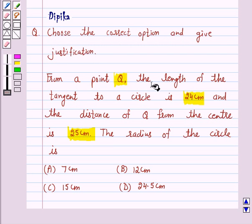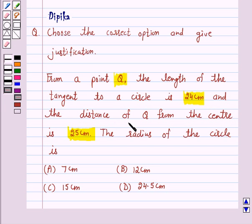From a point Q, the length of the tangent to a circle is 24 cm and the distance of Q from the center is 25 cm. The radius of the circle is: A, 7 cm, B, 12 cm, C, 15 cm, and D, 24.5 cm.